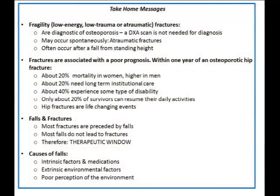The take-home messages: first, fragility fractures — also known as low energy, low trauma, or atraumatic fractures — are in themselves diagnostic of osteoporosis. You can confidently make the clinical diagnosis of osteoporosis based on the fact that the patient has a fragility fracture, including an asymptomatic vertebral compression fracture discovered accidentally during imaging. Hip fractures are associated with a poor prognosis: about 20% one-year mortality in women, even higher in men. About 20% need long-term institutional care, and 40% experience some type of disability.